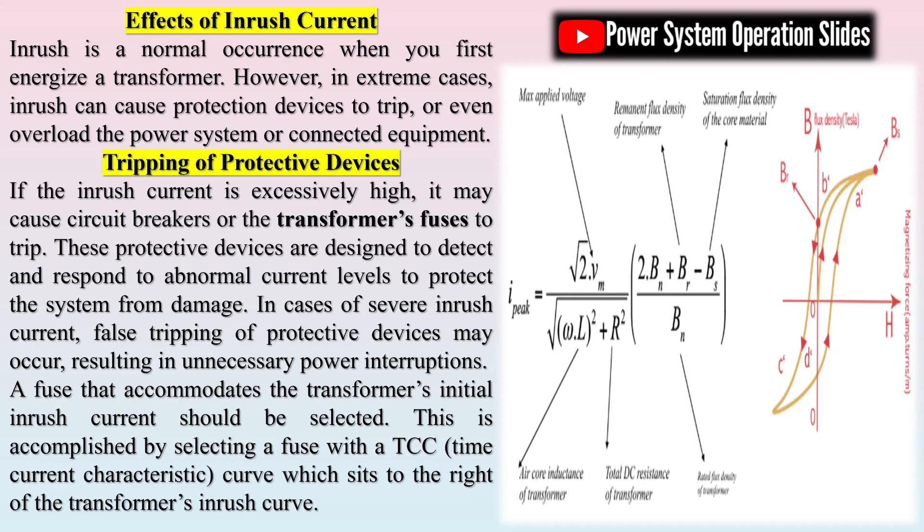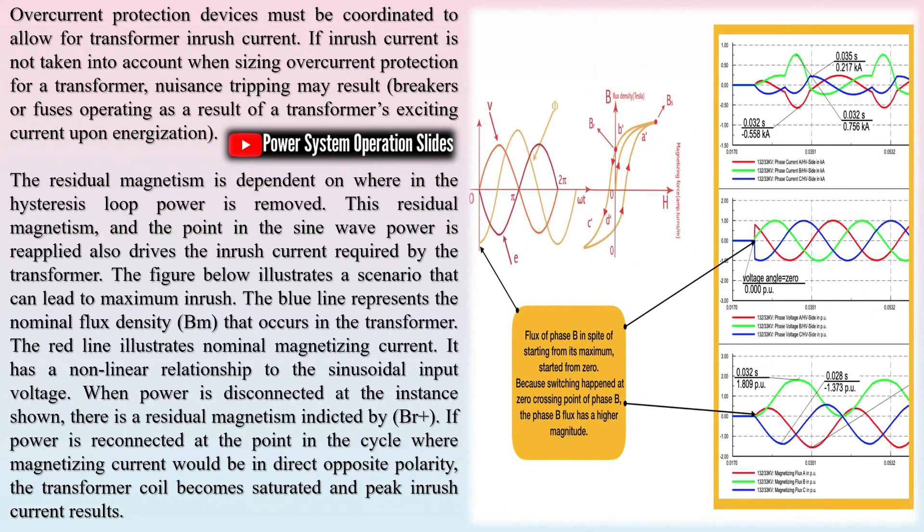Inrush current calculations depend on several factors, such as the saturation characteristics of the transformer core, the waveform of the supply voltage, and the specific transformer design. Calculating transformer inrush current is a complex process that involves several interrelated factors. The transformer core exhibits a non-linear behavior governed by its BH magnetic curve.